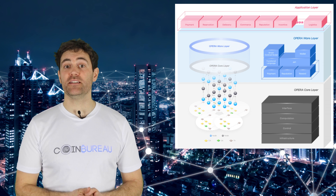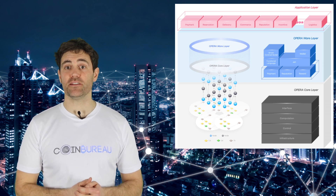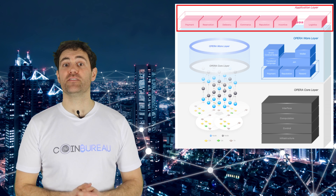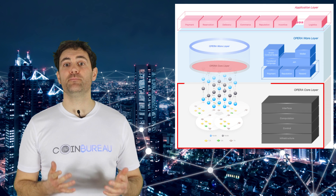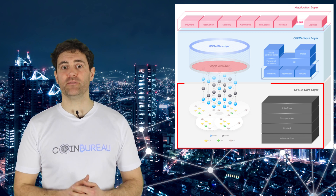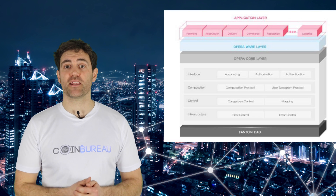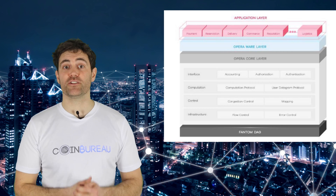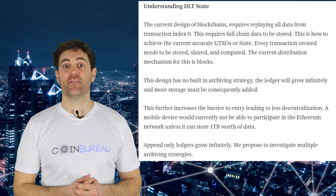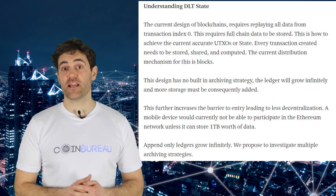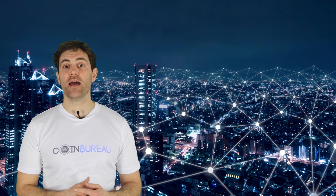Fantom's protocol architecture is separated into three distinct layers with specific duties and responsibilities: the Opera Core layer, the Opera Ware layer, and the Application layer. The Opera Core layer is the bottom layer, responsible for ensuring consensus with nodes throughout the protocol, supervising and managing accounts, and validating node authority. Through the DAG, this layer confirms all transactions while nodes process them. Each confirmed transaction is retained within the node — similar to a blockchain — allowing the node to create a verifiable file showing the state of the ledger is legitimately in consensus.